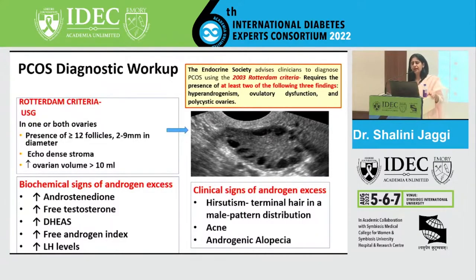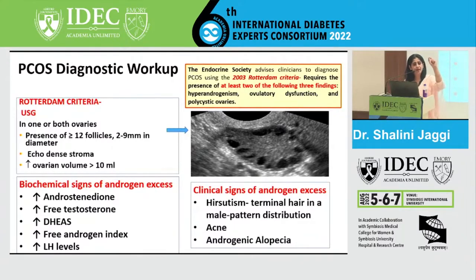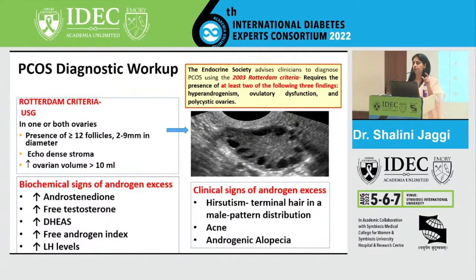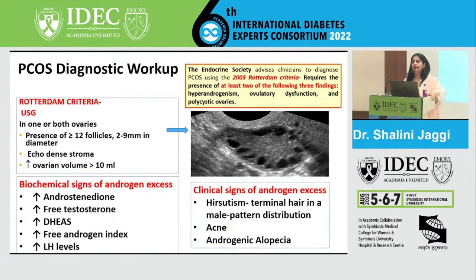For PCOS diagnosis, use the Rotterdam criteria: at least two of three criteria must be present. First, biochemical evidence of androgen excess — elevated free testosterone or DHEAS. Second, polycystic ovaries on ultrasound: at least 12 follicles of 2–9 mm diameter with echogenic stroma and/or ovarian volume greater than 10 mL in one or both ovaries. A polycystic echo texture alone is not sufficient — a radiological diagnosis of PCOS requires meeting these specific criteria.